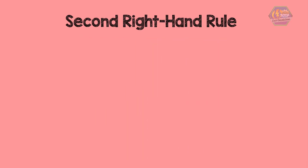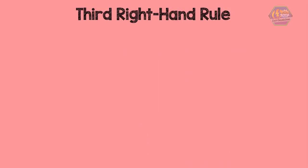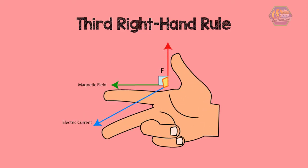Finding the direction of this force is where the third right-hand rule comes in. Straighten your fingers with your thumb stretched outward. Then point your arm in the direction of the particle's velocity, and bend your fingers to make them point in the direction of the magnetic field lines. Here's where things get a little tricky: if the charged particle is positive, your thumb is pointing in the direction of the force. But if it's negative, the force is pointing in the direction opposite to your thumb.